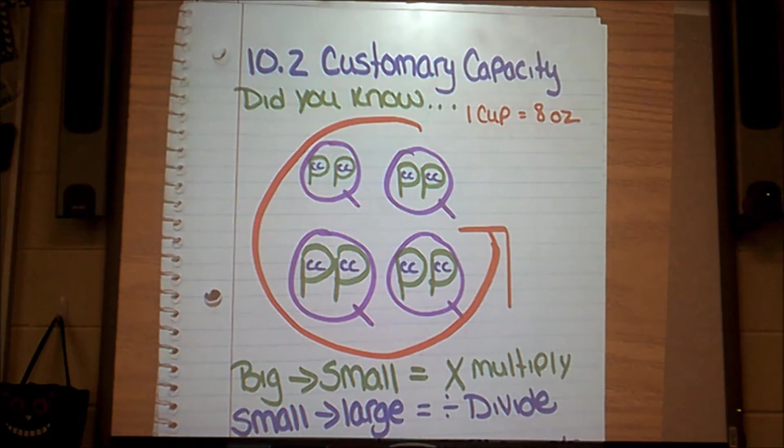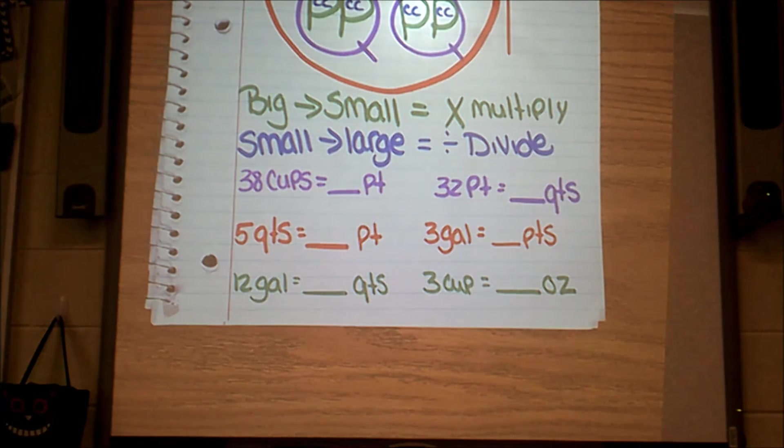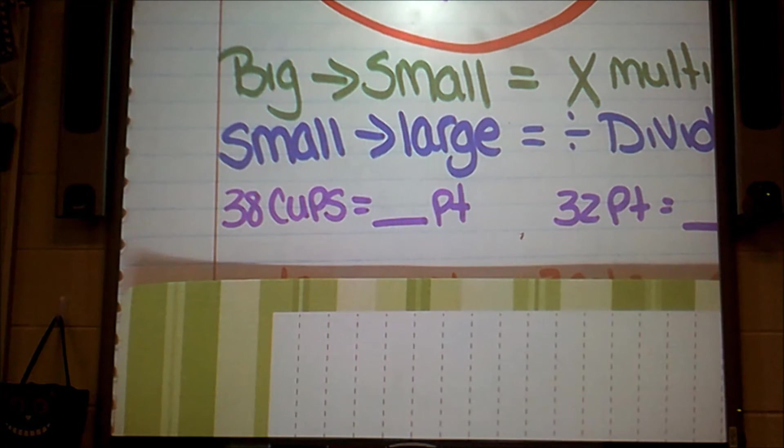Some of your conversions might ask you to convert into ounces, so you need to have that conversion. So we're going to get right into some customary capacity conversions. Remember, big to small, we multiply and small to large divide. For our first conversion that you see in purple there, 38 cups equals how many pints? PT is an abbreviation for pints. So what I'd like you to do is look at that big G that you made with all of your conversions and I want you to tell me what is bigger, a cup or a pint?